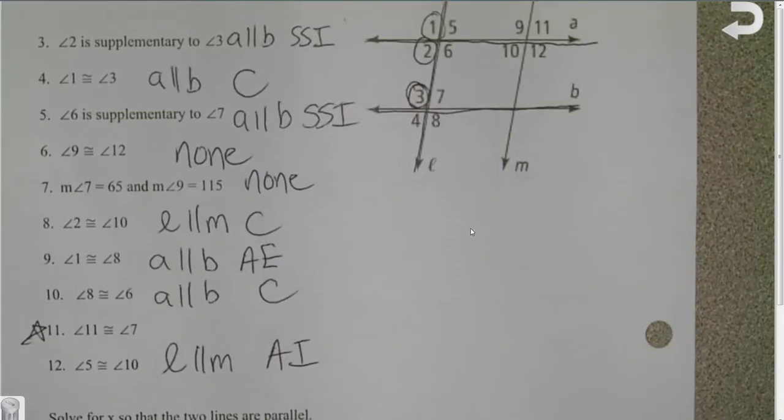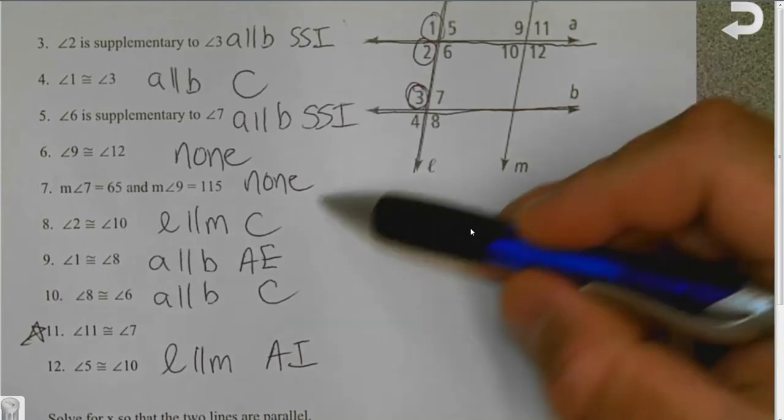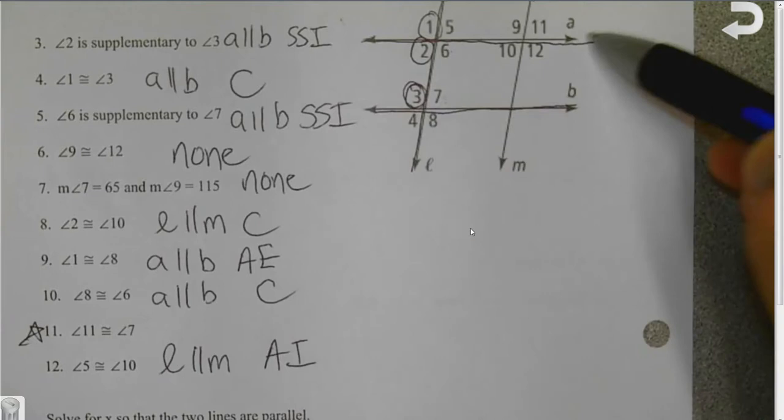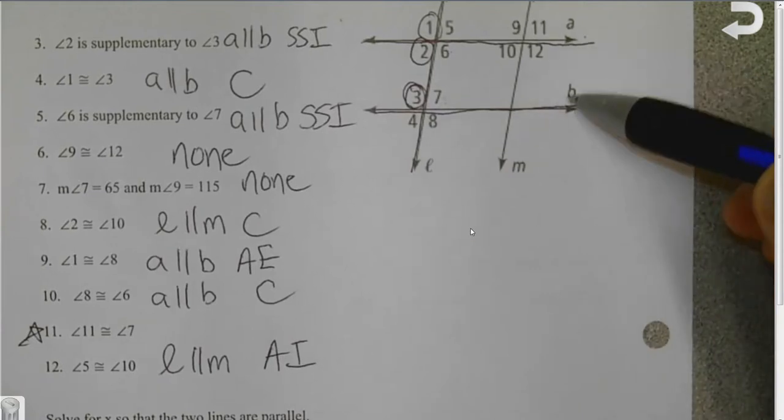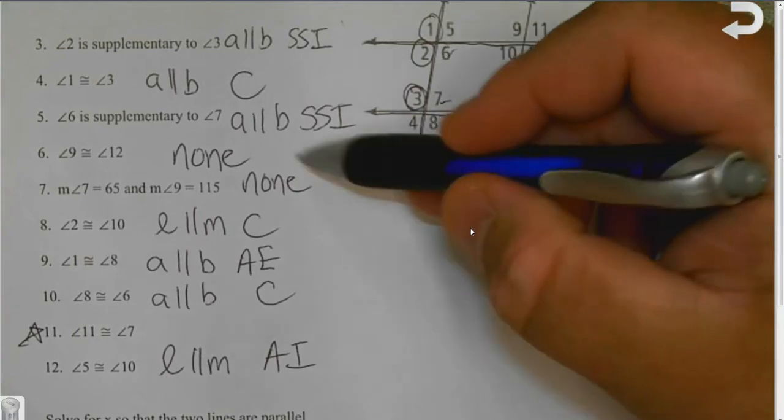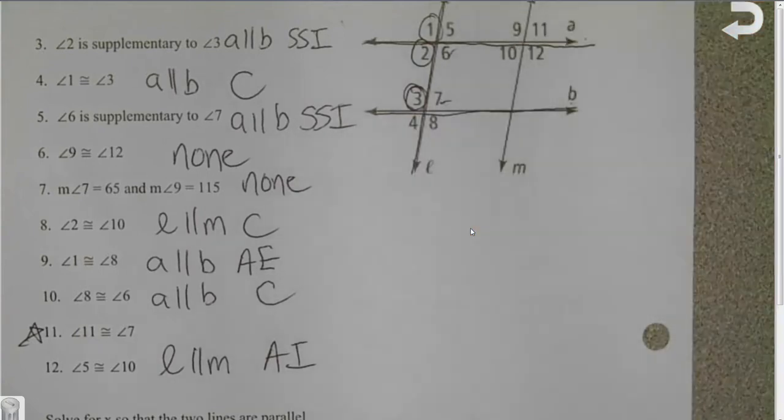Okay. So hopefully you were able to get answers. For number 5, we had 6 and 7. That's line A and B. And it's because 6 and 7 are same side interior. For 6, 9 and 12, I told you, vertical proves nothing.